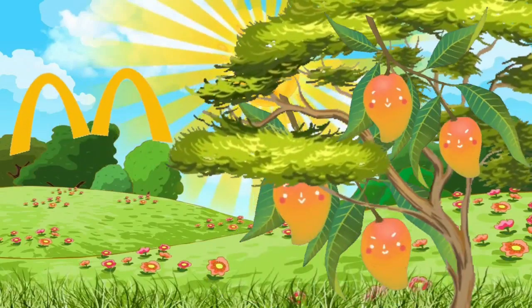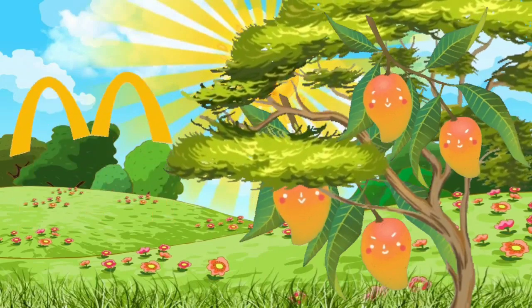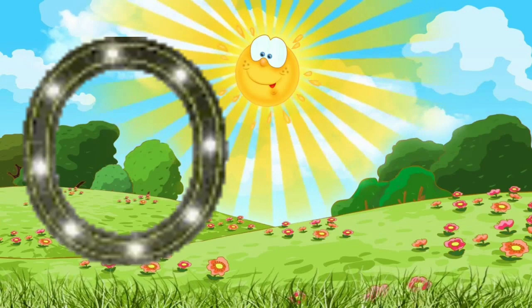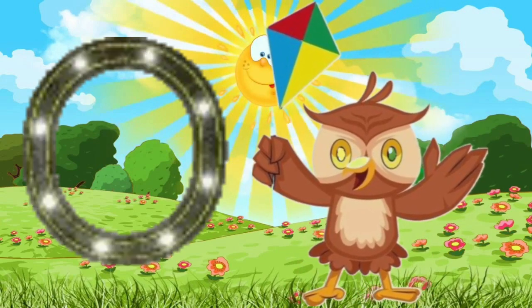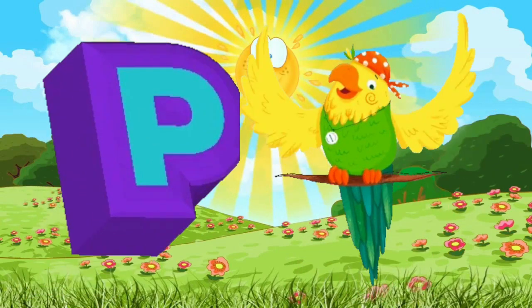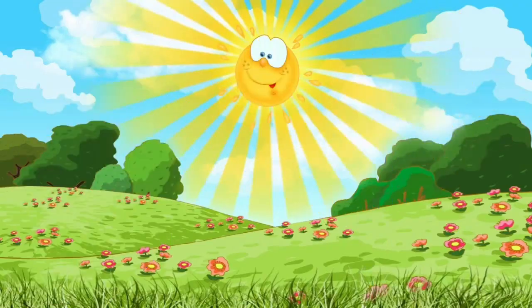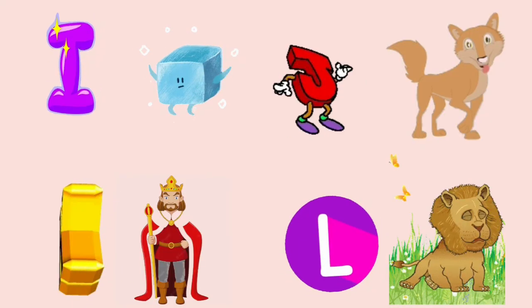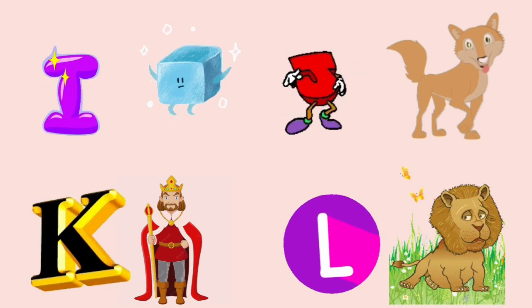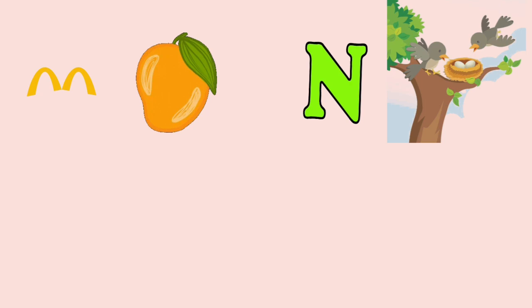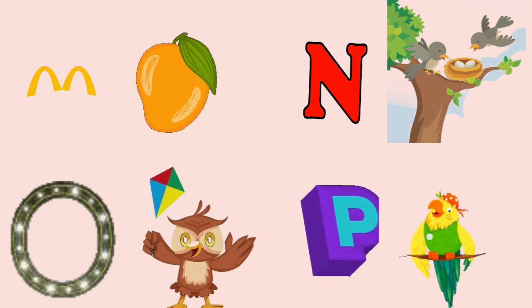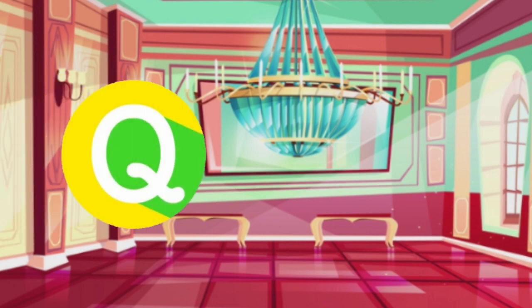M is for mango, m-m-mango. N is for nest, n-n-nest. O is for owl, ow-ow-owl. P is for parrot, p-p-parrot. Dum-dee-da-dum-dee-dum, dum-dee-da-dum-dum-dum.